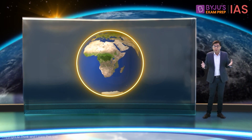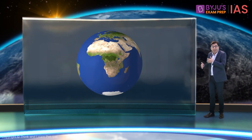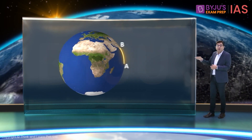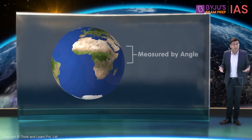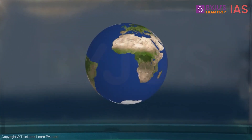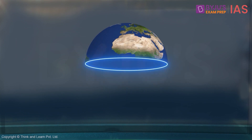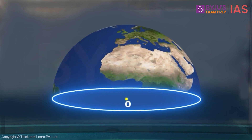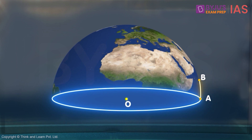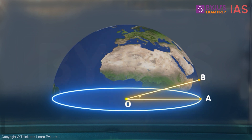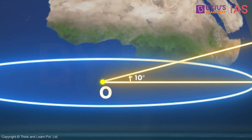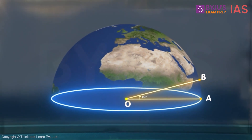Our earth is a sphere. When you move on spherical objects like this, it is more convenient to measure the distance in terms of degrees. Let's cut this globe into half along the equator and call the center as O. I want to move from the equator towards the north pole — I move from A to B. If I draw a line from B to O and measure the angle BOA, this angle measures 10 degrees. This is to say that I have moved 10 degrees north.